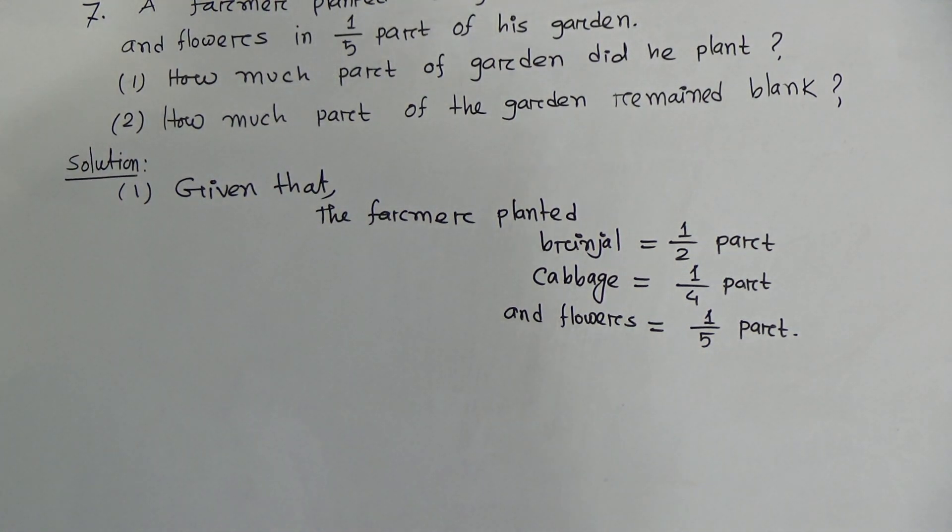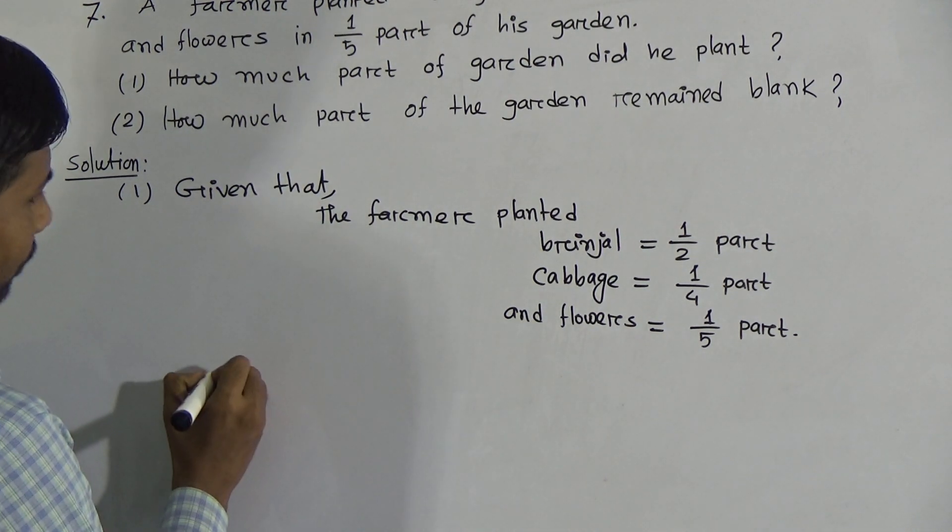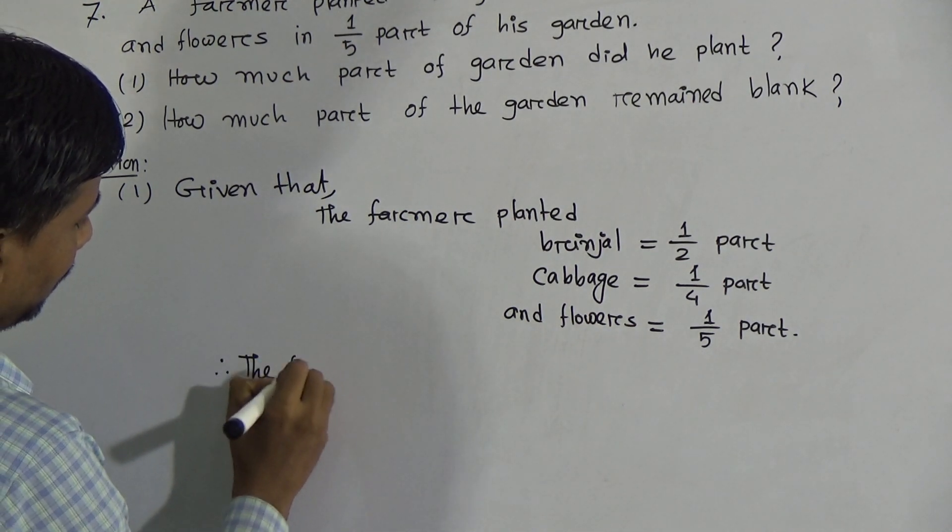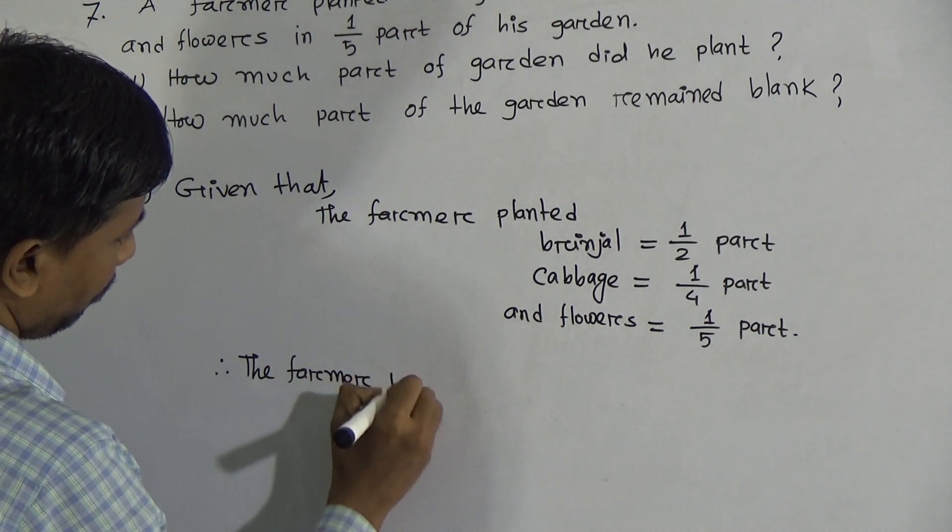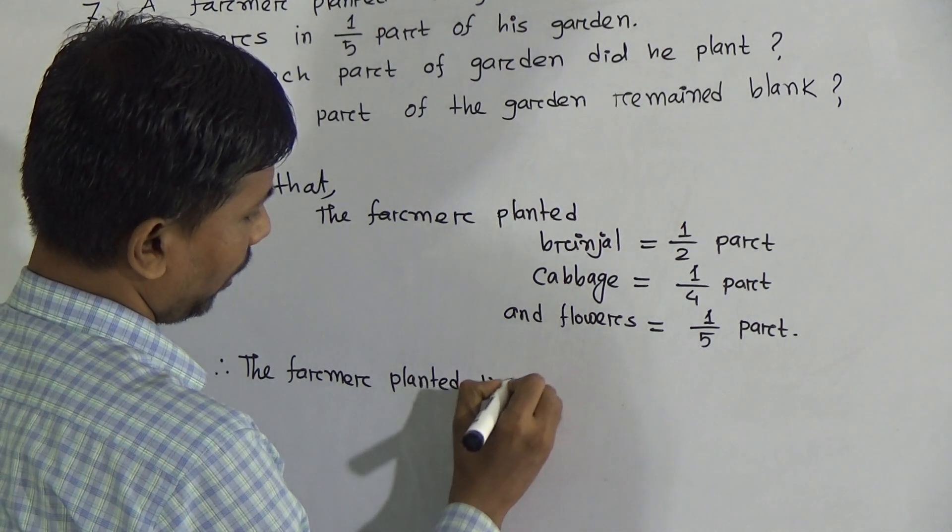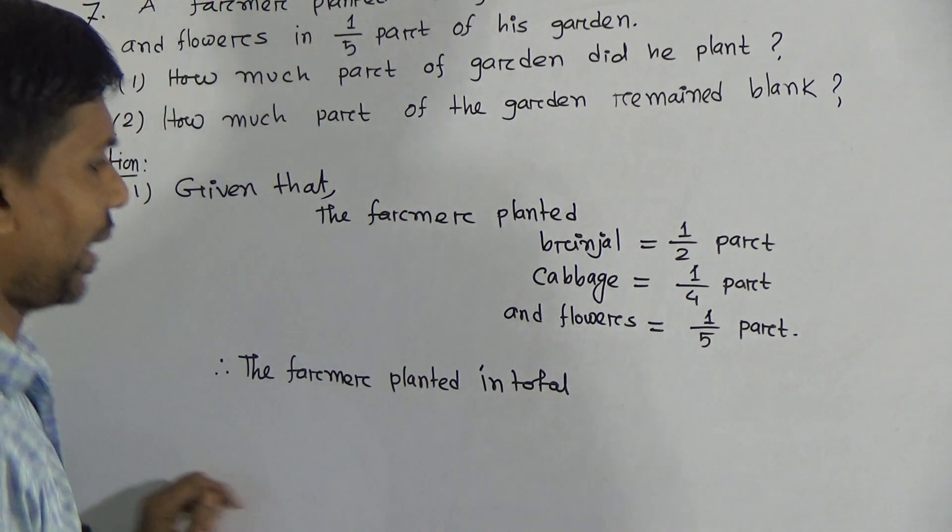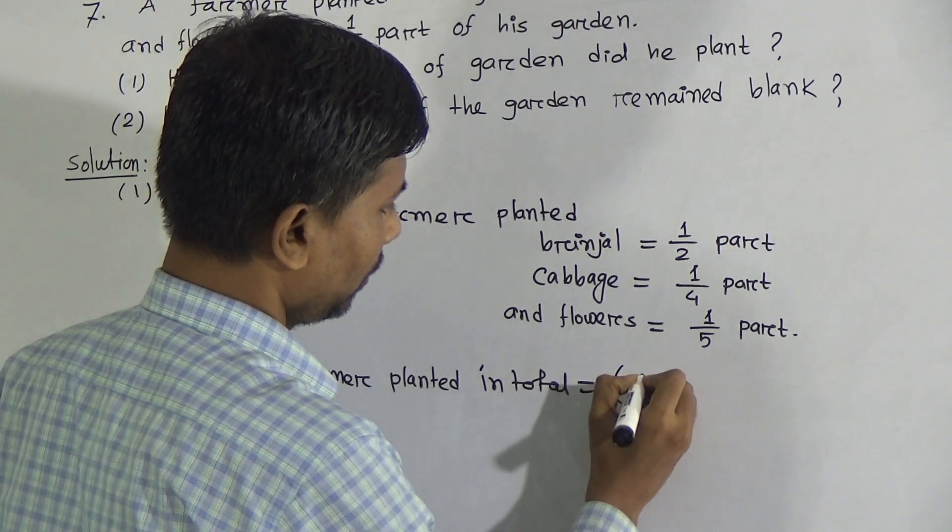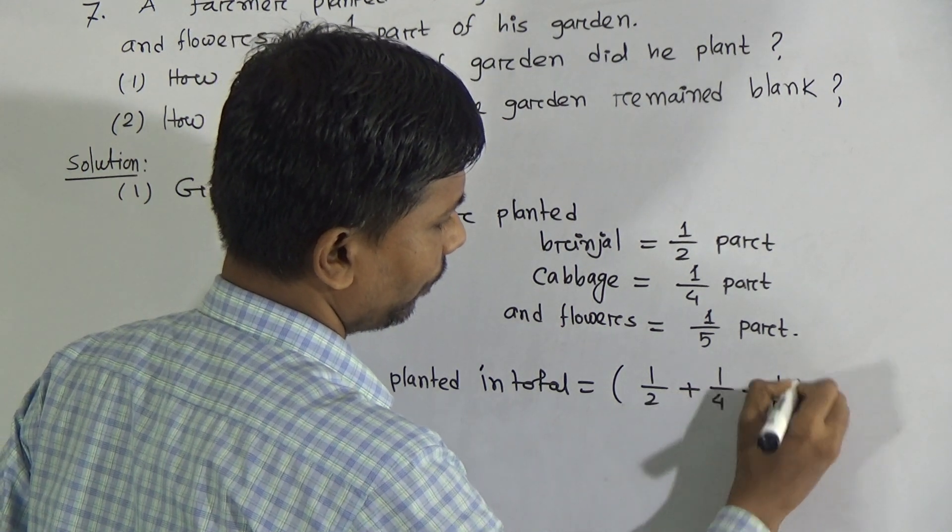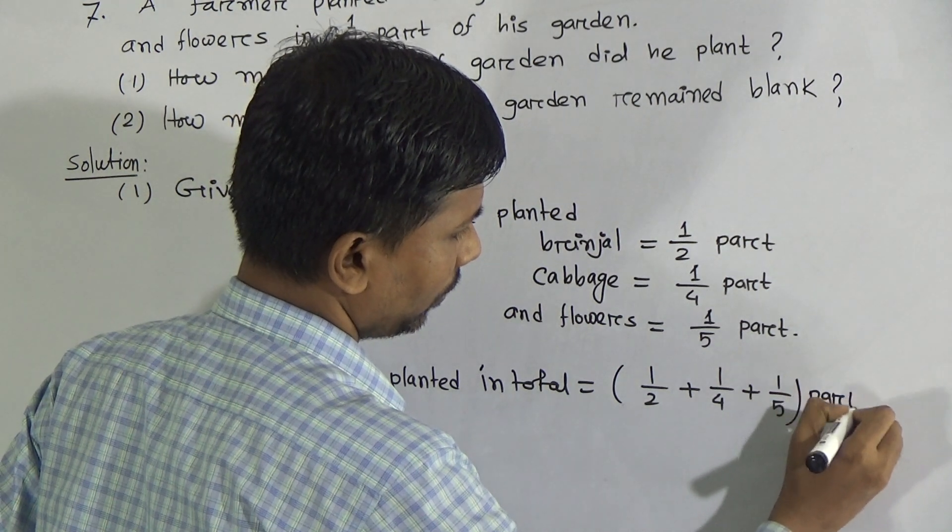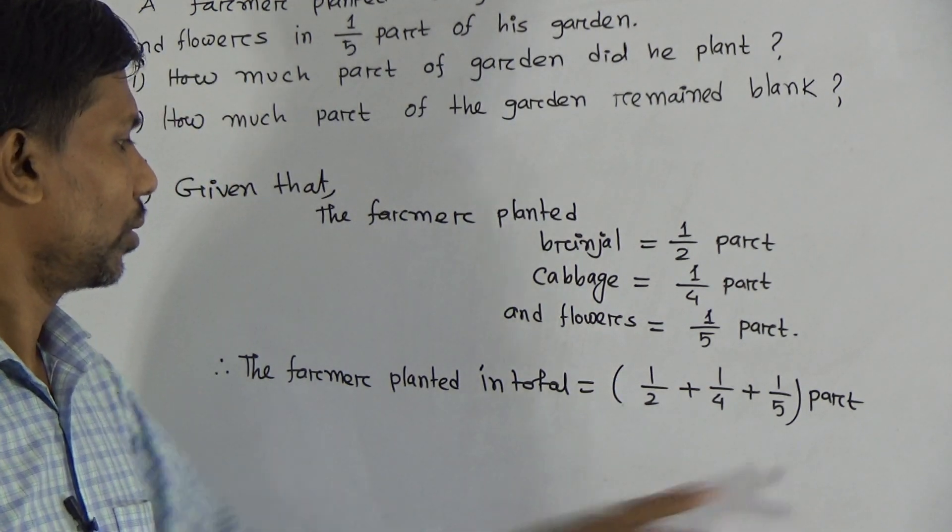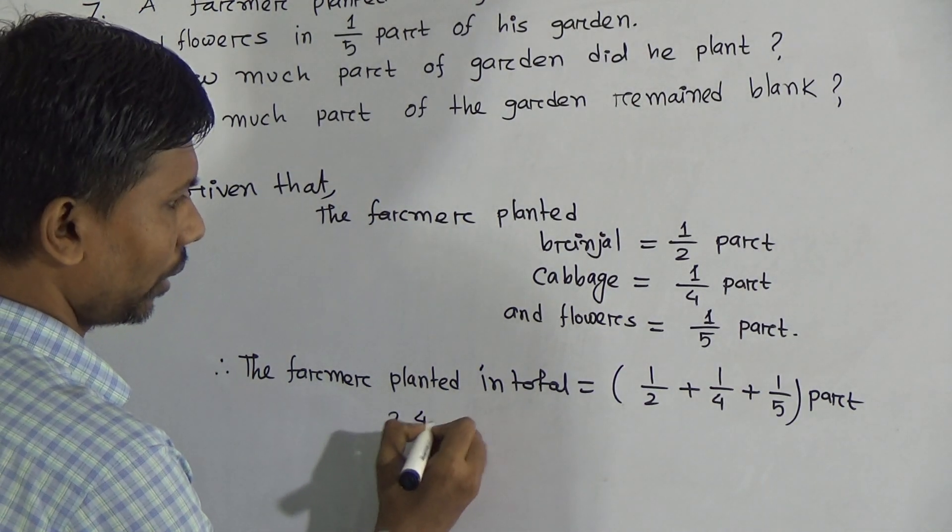Now according to the question, how much part of garden did he plant? Write in total: the farmer planted in total 1/2 plus 1/4 plus 1/5 part. Now we have to do the LCM of 2, 4, and 5.